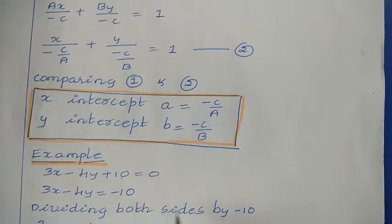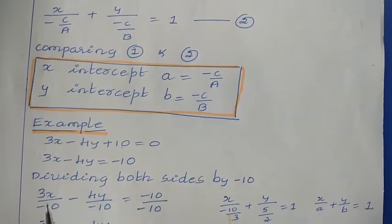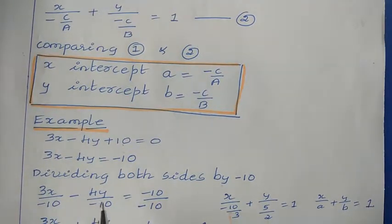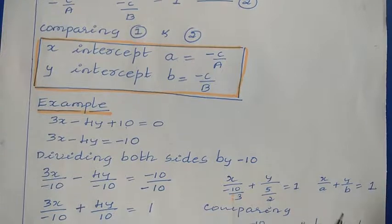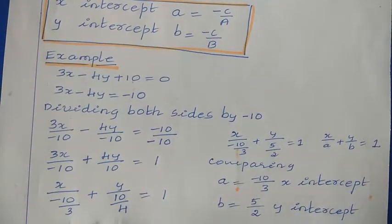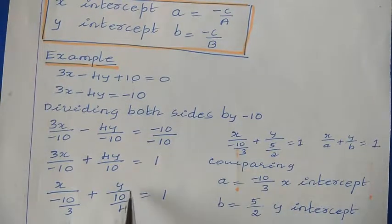Now divide both sides by minus 10. This gives 3X divided by minus 10 minus 4Y divided by minus 10 is equal to 1, which simplifies to 3X divided by minus 10 plus 4Y divided by 10 is equal to 1. We can rewrite this as X divided by (minus 10 over 3) plus Y divided by (10 over 4) is equal to 1.